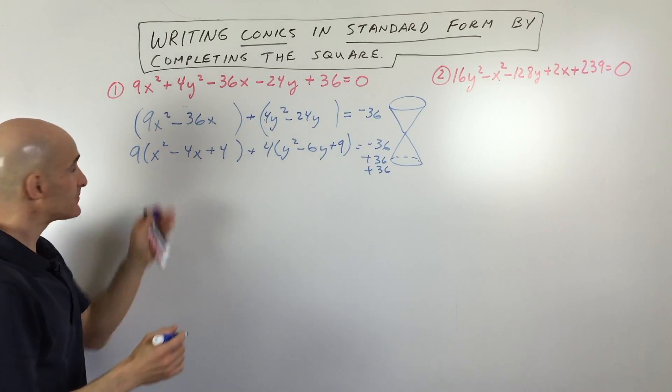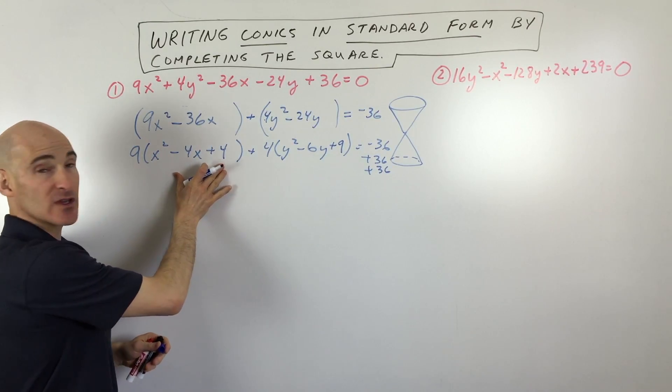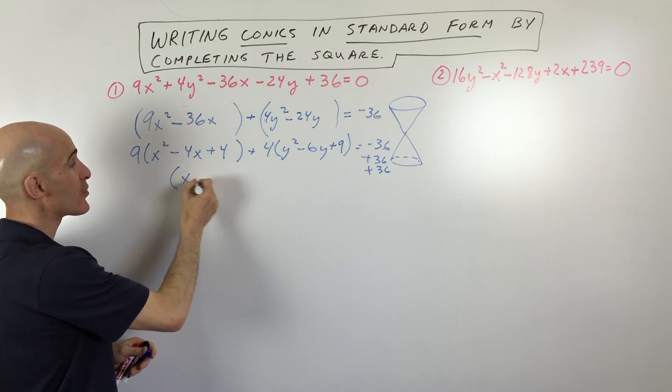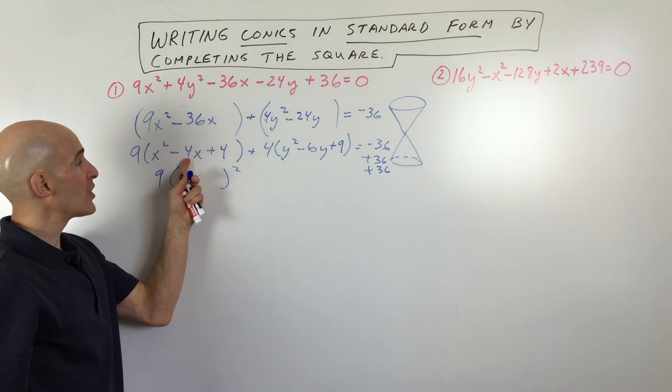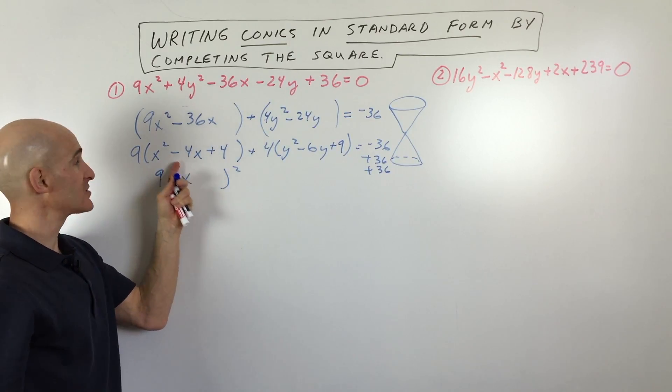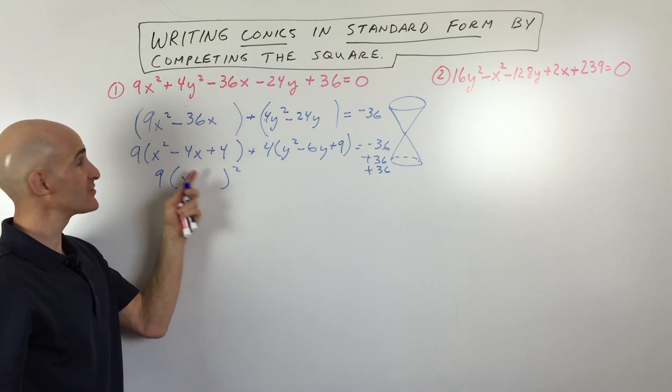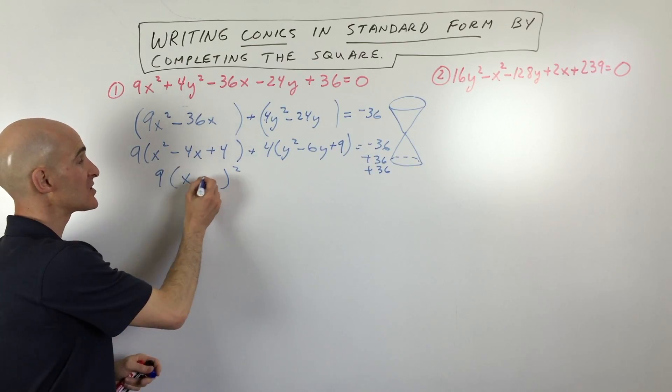So now we're going to factor this. And the way that we've set it up because we completed the square is that this becomes a perfect square. And one thing that I tell students all the time is that you can always look at this middle coefficient and just take half of that quantity. So if it's positive 4, this would be positive 2. If it's negative 4, it's just going to be negative 2.